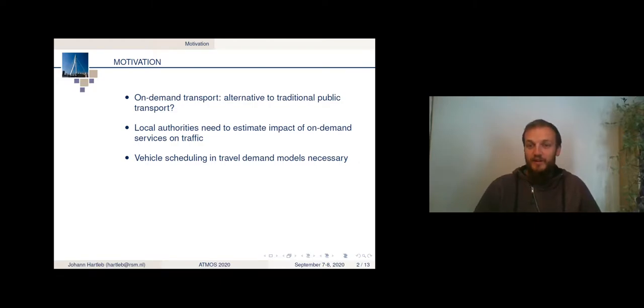So they usually estimate the traffic in cities with travel demand models, and these travel demand models assume a public transport system to be given. But in this case the public transport, which is on-demand, depends on the demand. So we need to estimate the supply, that means where the on-demand vehicles are, while estimating the demand. So we need to have a vehicle scheduling step in the travel demand model.